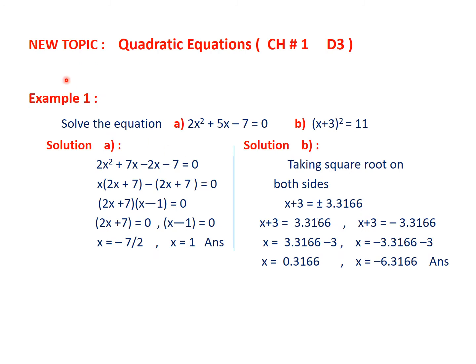Now the new topic: quadratic equations, chapter 1 in D3. We are given the equation 2x² + 5x − 7 = 0 and must find its solution. We prefer the midterm break factorization method since these are simple numbers. We find 2 × (−7) = −14; possible pairs are +7 and −2. Using these working steps, we factorize and equate each factor to zero, getting two answers as solutions.